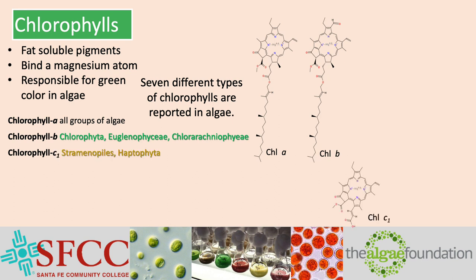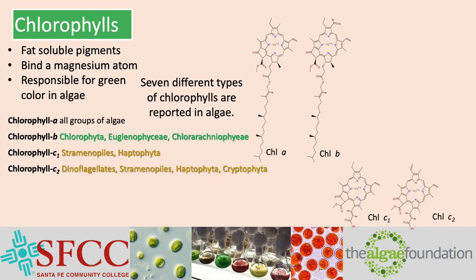Chlorophyll C1 is present in the stramenopiles and the haptophytes, and includes the brown algae. Chlorophyll C2 is present in dinoflagellates, stramenopiles, haptophytes, and cryptophytes. The chlorophyll Cs do not have the long phytol tail of the other chlorophylls, and there are at least five and possibly more chlorophyll Cs — we are only showing the two most common.